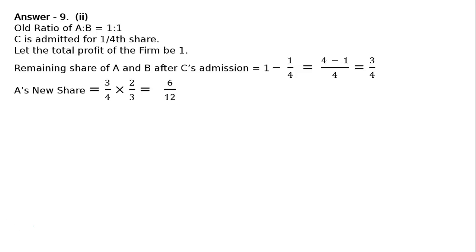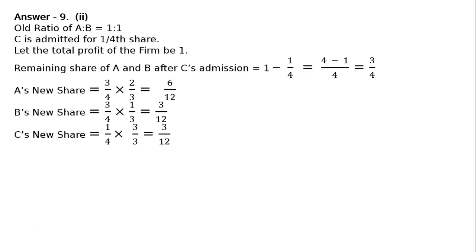It will be distributed in the ratio of 2:1. Hence A's new share: 3/4 multiplied by 2/3, that is equal to 6/12. B's new share: 3/4 multiplied by 1/3, that is 3/12. C's new share is 1/4, multiplied by 3/3, giving 3/12. Therefore the new ratio of A to B to C is equal to 6:3:3, which simplifies to 2:1:1.